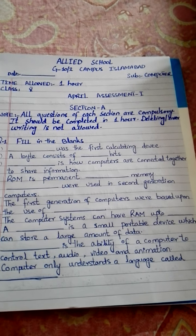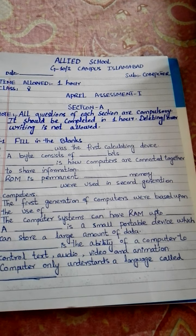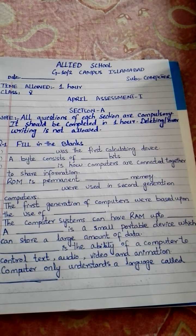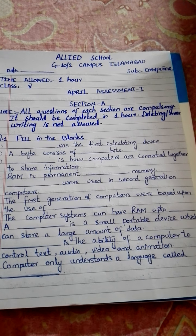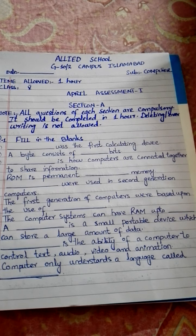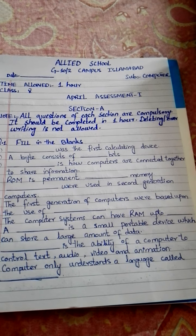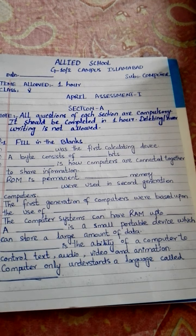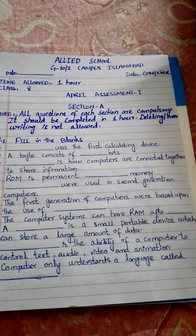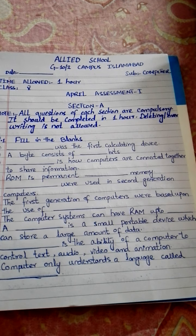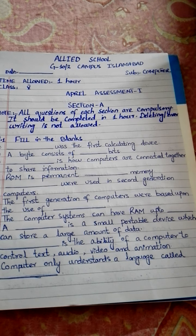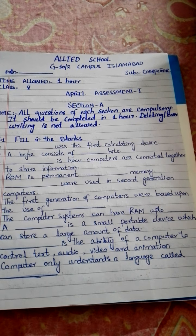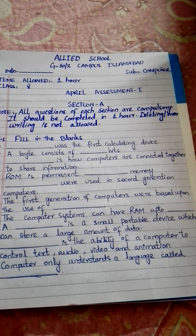Assalamu alaikum students, hope you all will be fine. This is an April assessment of class 5. Section A. All questions of each section are compulsory. It should be completed in 1 hour. Deleting and overwriting is not allowed. Har section ki saare questions compulsory hain. Aapne inko 1 hour mein complete karne hain. Deleting overwriting allowed nahi hai.